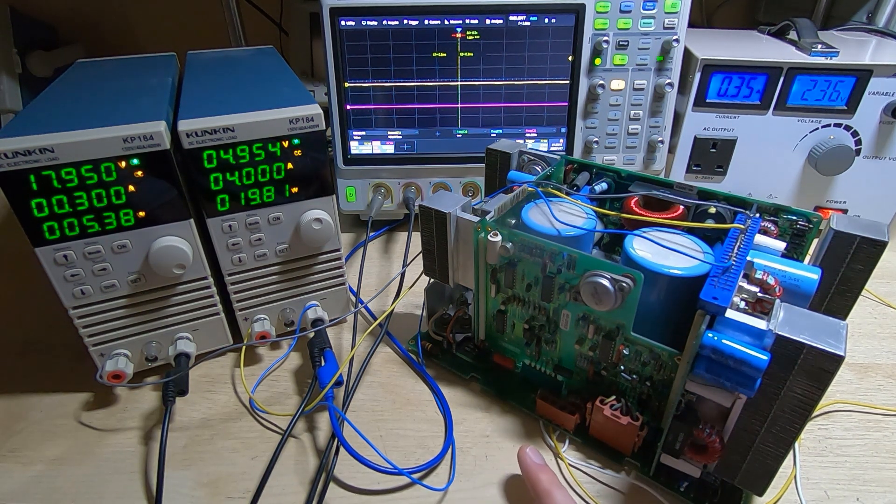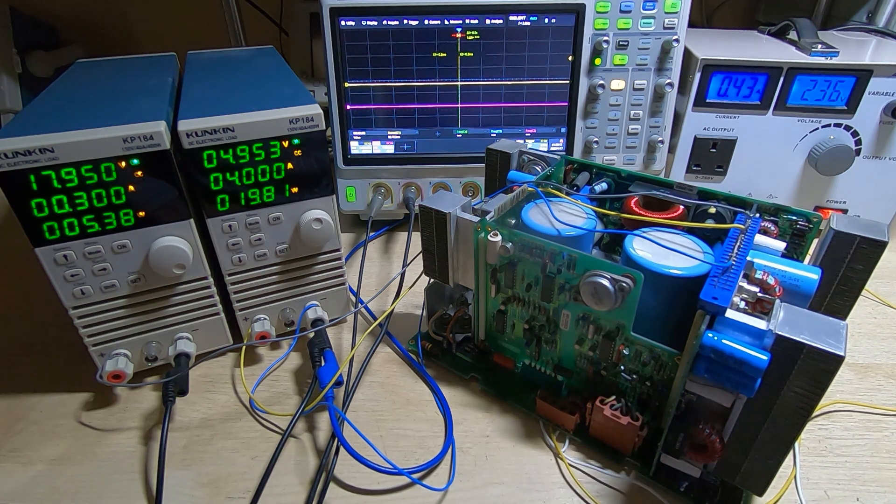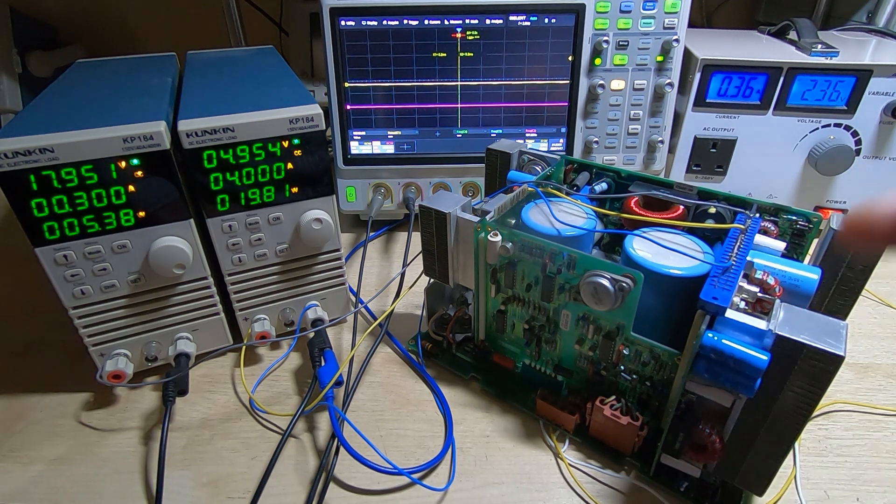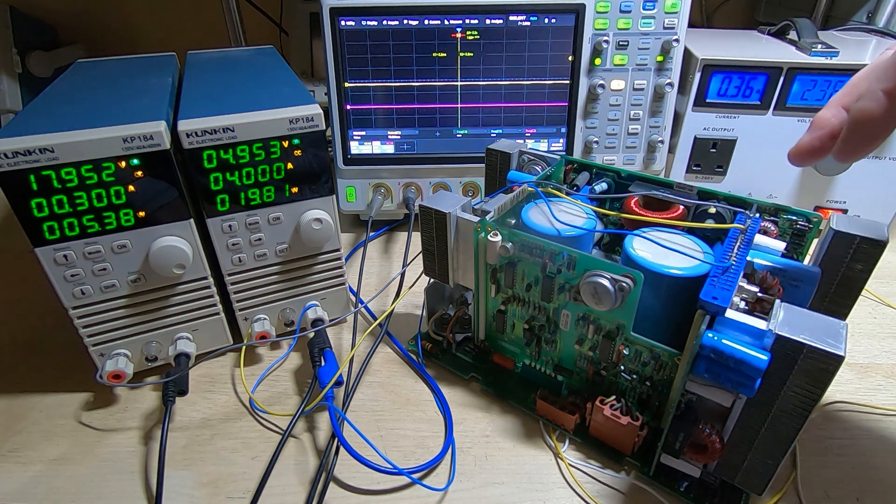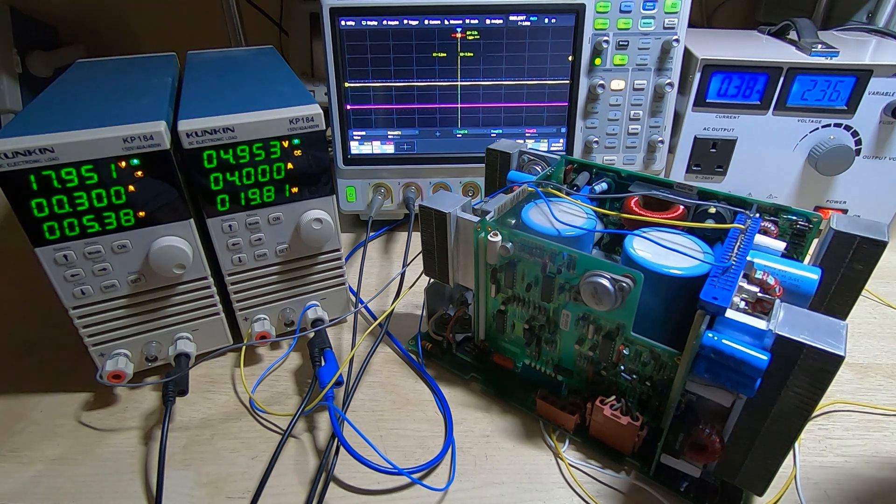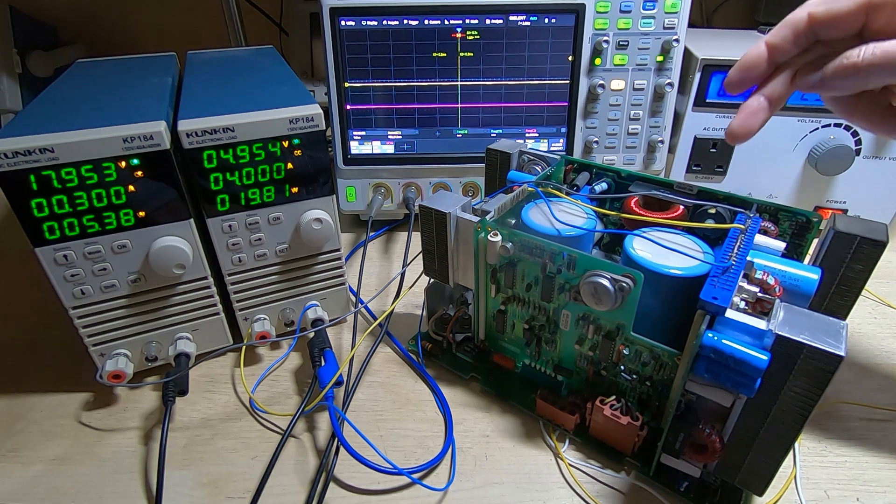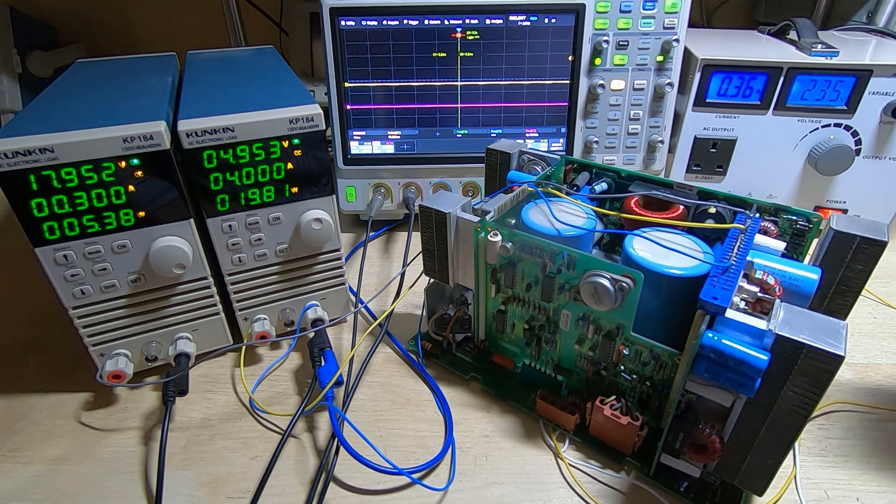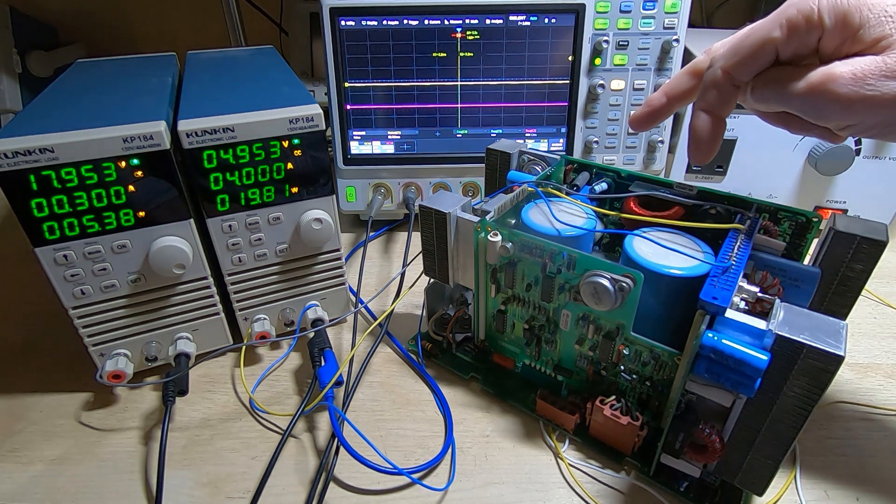The other thing I've been testing is the shutdown characteristics. It is important that this supply does what it's supposed to in terms of the protection. Each of the two regulator boards has an overcurrent sense transformer built into the system, and the purpose of those is if either of the two boards draws too much current it will cause the supply to shut down.